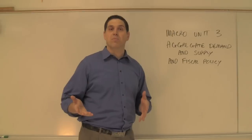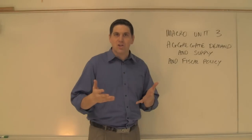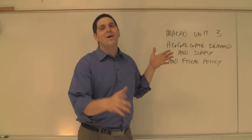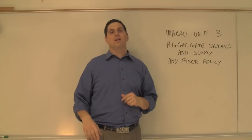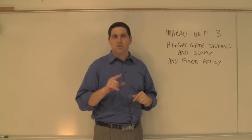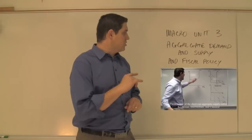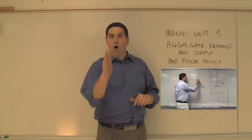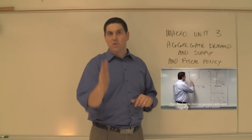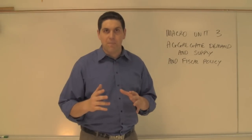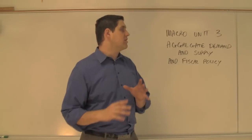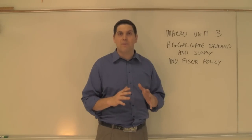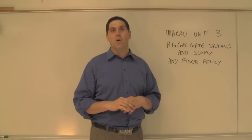Next, you're going to talk about aggregate supply — the production of different things and the relationship between price level and output. But there's a short run and a long run, so this gets tricky. Make sure you pay attention: there's a short run curve and a long run curve that's vertical — the long run aggregate supply curve. Make sure you understand why it shifts right or left, and what happens to price level and output.